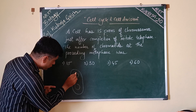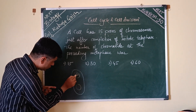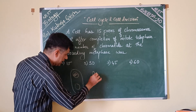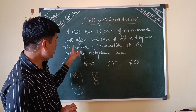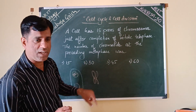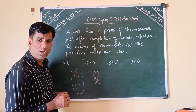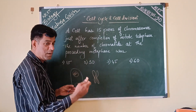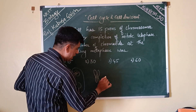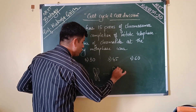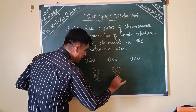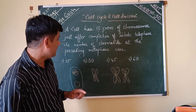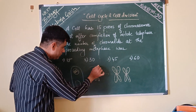Remember, the chromosome is appearing something like this — you have 15 pairs. The question asks for the number of chromatids at the preceding metaphase. Each one is having a single chromatid now, but before this metaphase, before anaphase separated them, the chromosomes appeared with two chromatids attached. So at every chromosome in metaphase, you had two chromatids.